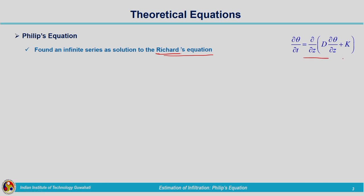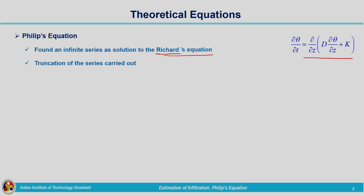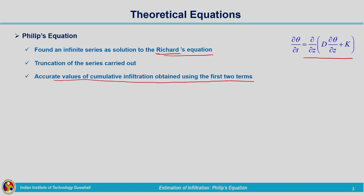Richard's equation is: del theta over del t is equal to del over del z of D times del theta by del z, plus K. This is a combination of continuity and momentum equations — mass conservation equation and Darcy's law is taken for the representation of momentum equation. Since infinite series is utilized we need to go for truncation of the series, and it is found that accurate values of cumulative infiltration can be obtained from the first two terms.